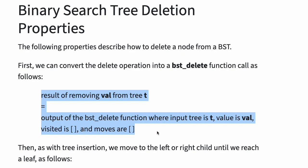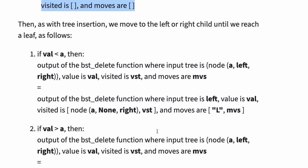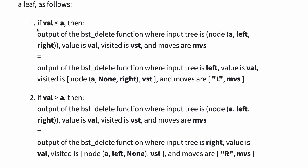As with tree insertion, we move to the left or right child until we reach a leaf. Property 1: if val is less than A, then the output of the BST delete function where input tree is node A left right, value is val, visited is BST, and moves are MVs, is equal to the output of the same function where input tree is left, value is val, visited is node A none right and VST, and moves are L MVs.